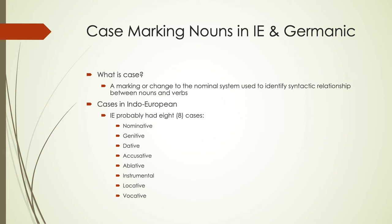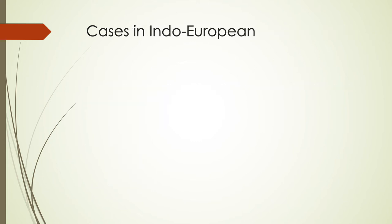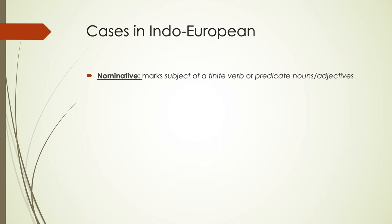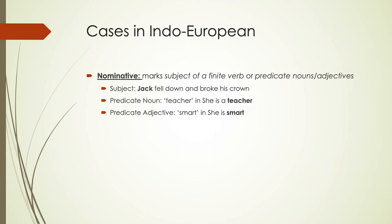Nominative case marks the subject of a verb or predicate nouns and adjectives. For example, in 'Jack fell down,' Jack is the nominative subject. It also applies to copula constructions — 'she is a teacher' or 'she is smart' would be marked for nominative. Genitive typically marks possession — the apostrophe-s in modern English is how we mark possession, and that is a genitive case marker. Something like 'a piece of cake' could also fall into the genitive category.